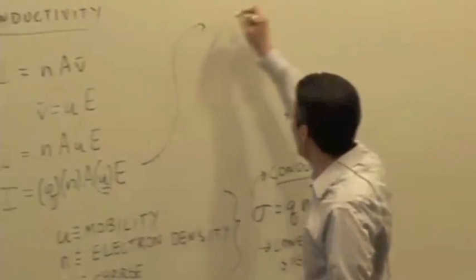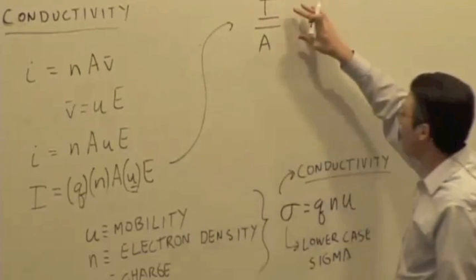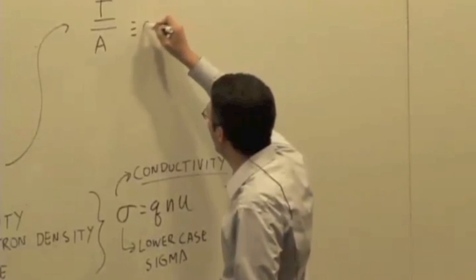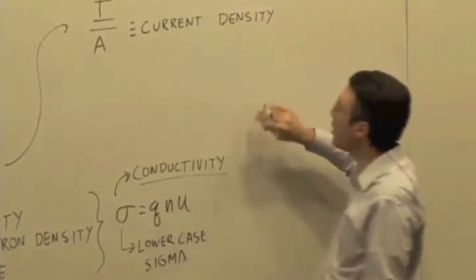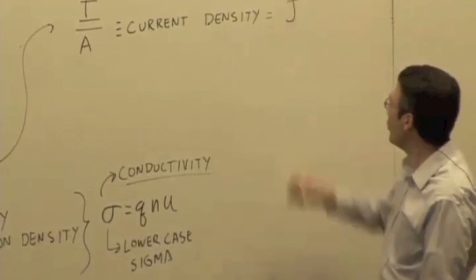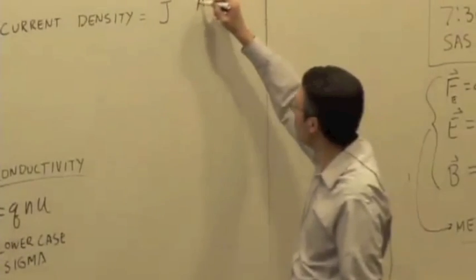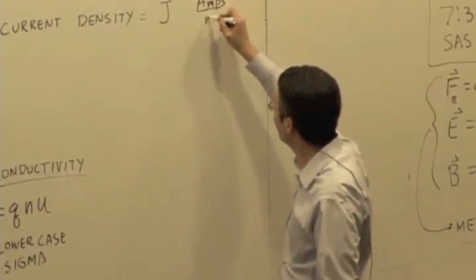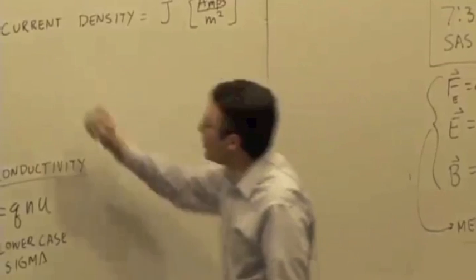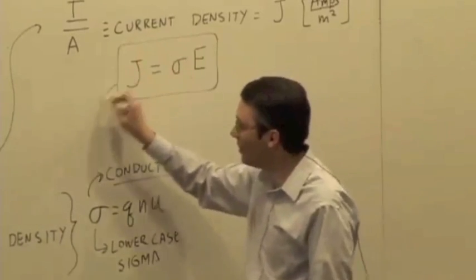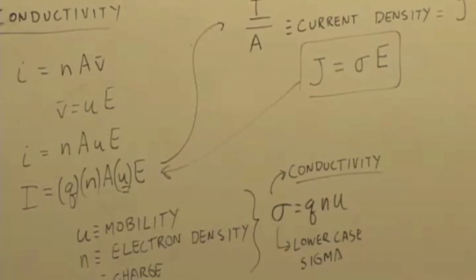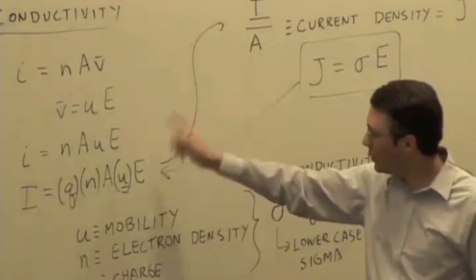Sometimes this is rewritten I over A. This is current per unit cross-sectional area. Sometimes this is called the current density. We're not going to talk too much about this, but you might see it in future courses. This is sometimes given the symbol capital J. It's just the number of amps per meter squared. Capital J is equal to sigma times E. It is another way of stating this relationship. This is something you may see in electrical engineering or an intermediate electromagnetism class. But it's nothing more than just restating I equals NAUE.